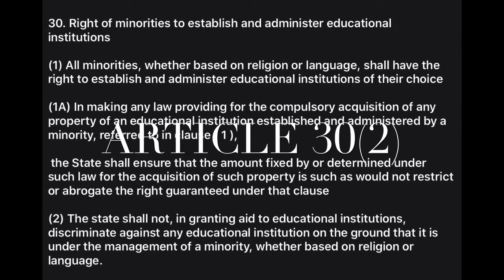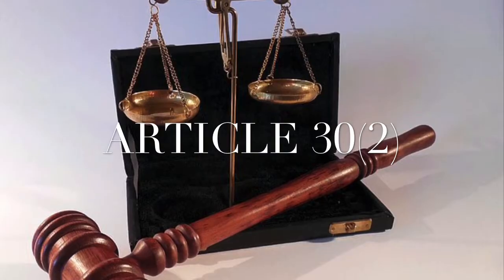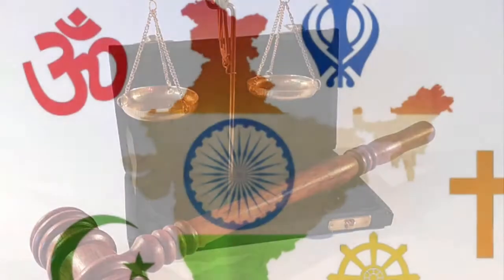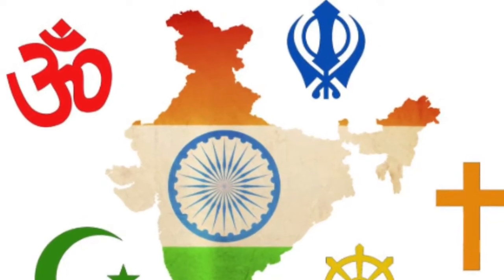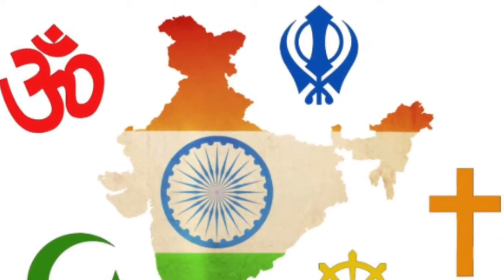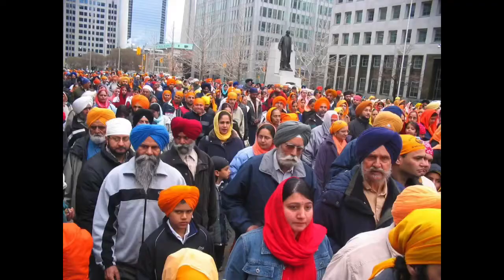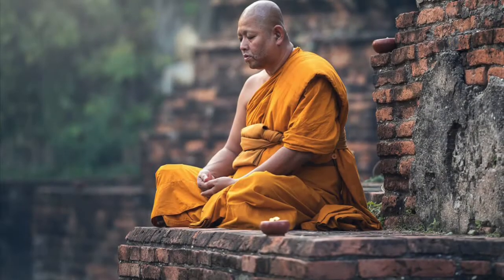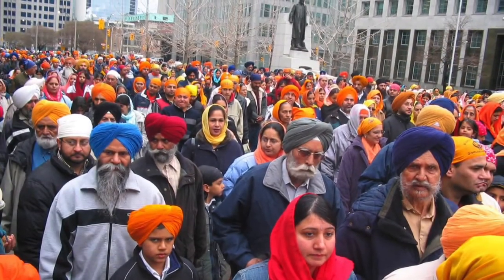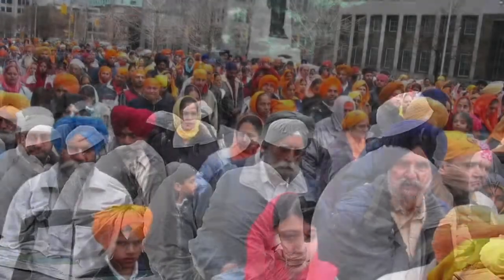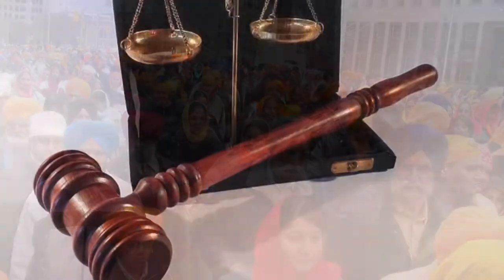So who exactly are we calling a minority? The six minority community groups existing in India are Muslims, Buddhists, Sikhs, Jains, Christians, and Zoroastrians. These communities have been nominated as minorities by the Union Government. So then who exactly are the linguistic minorities?